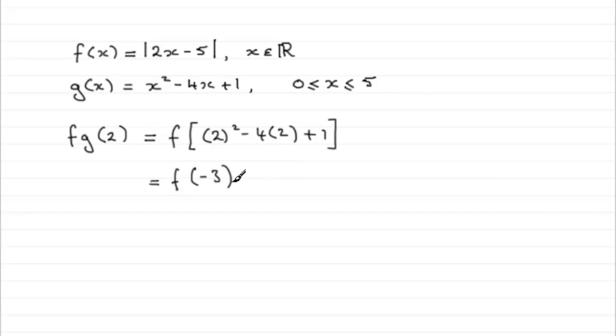So, f of minus 3. So now we put minus 3 in for x in f of x. This is going to equal the mod then of 2 multiplied by minus 3, minus 5.